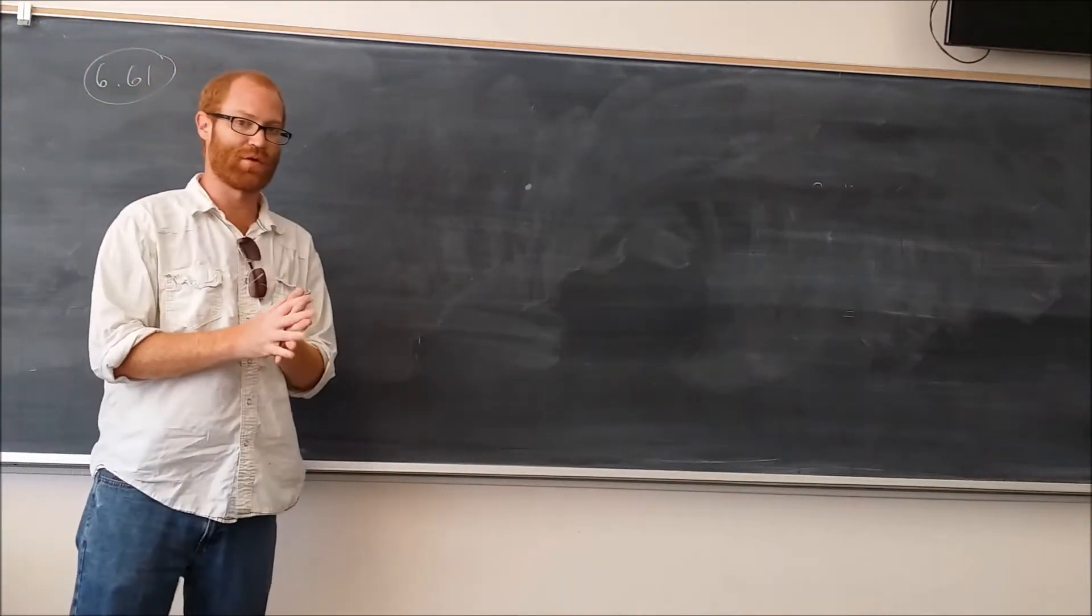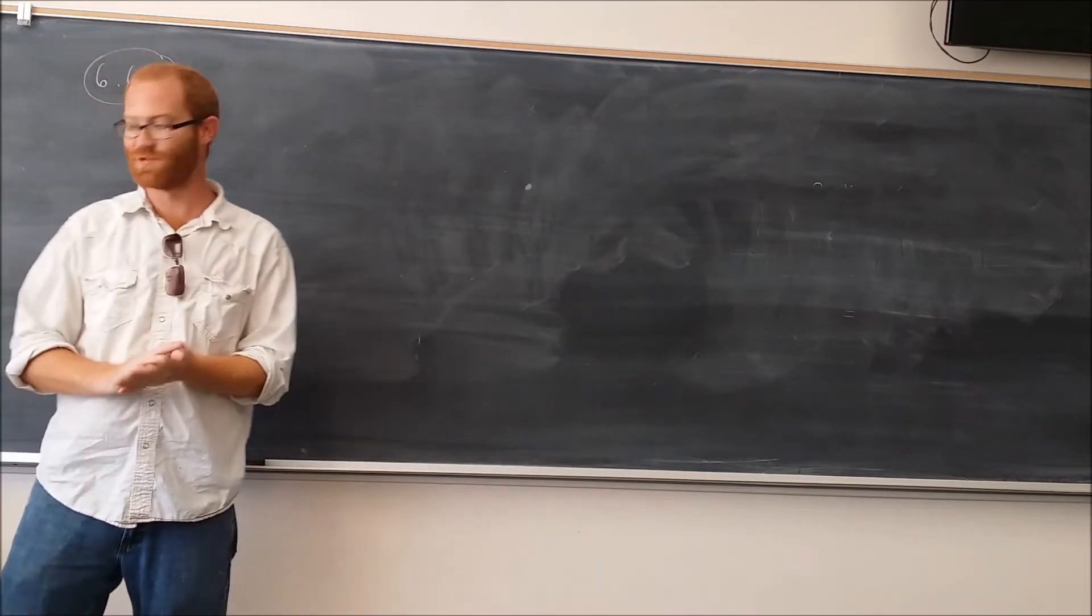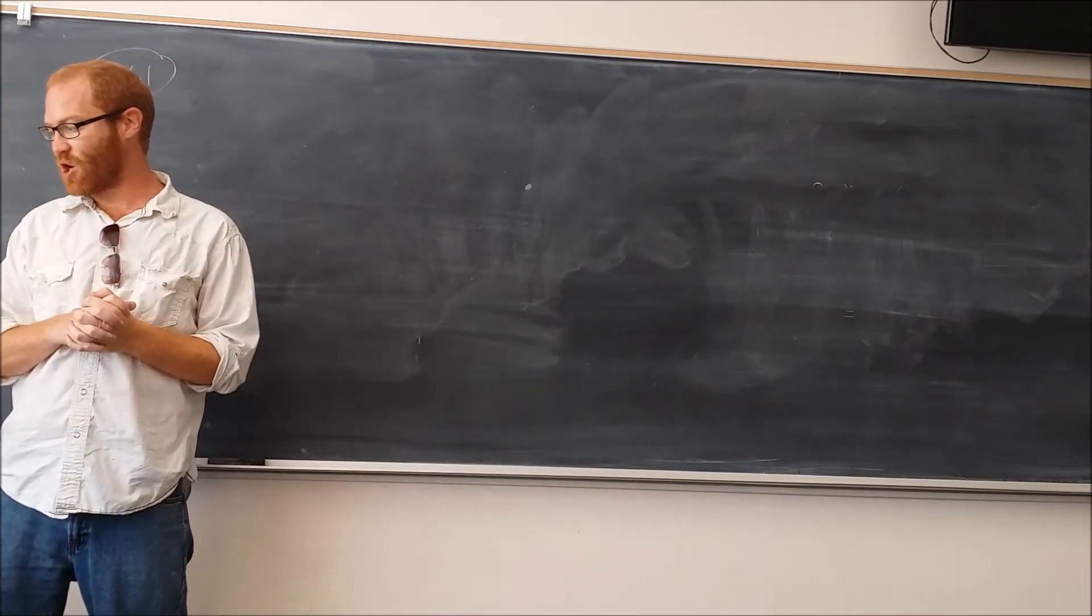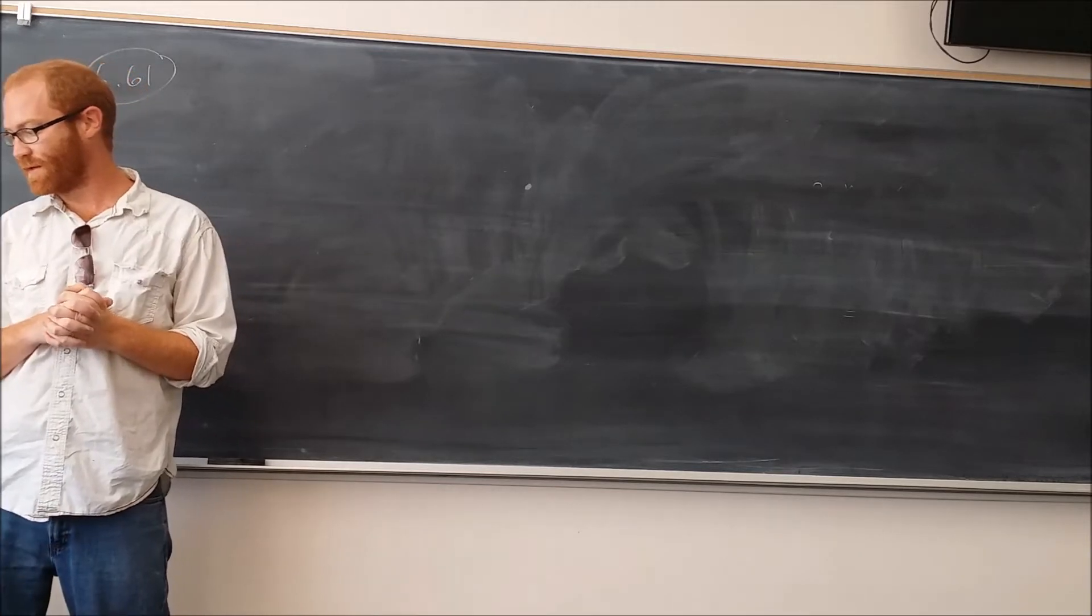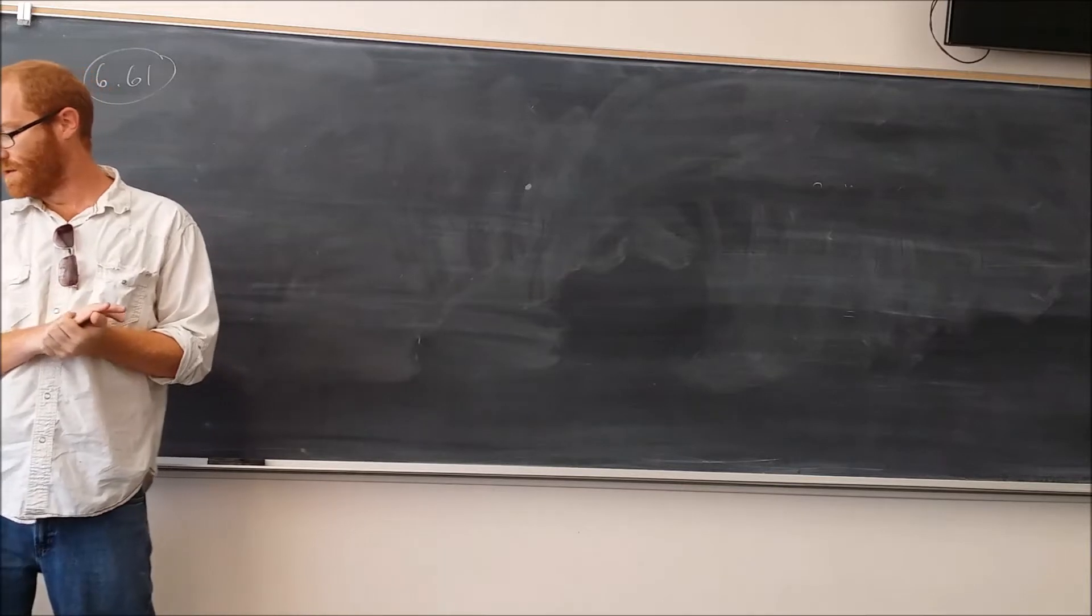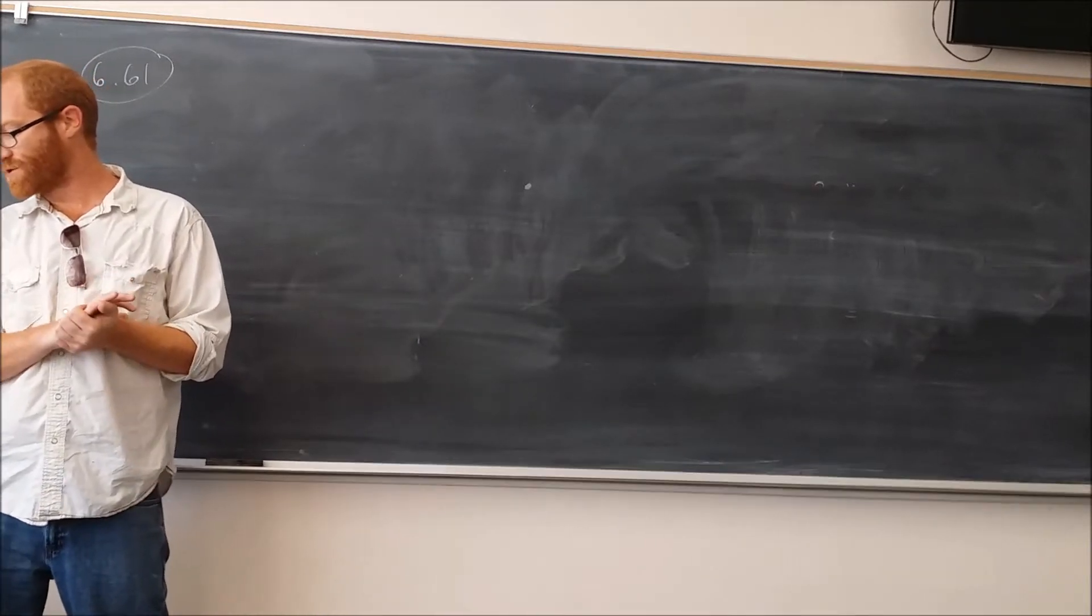Okay, so I'm going to do problem 6.61 from Serway and Jewett 8th edition. The problem says a car rounds a banked curve. The radius of curvature of the road is R, we have the banking angle, and the coefficient of friction.